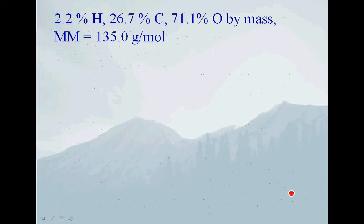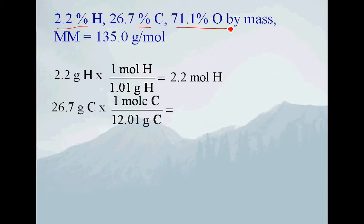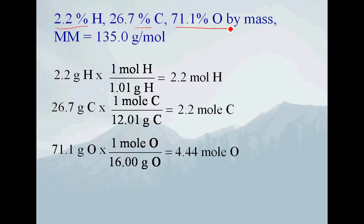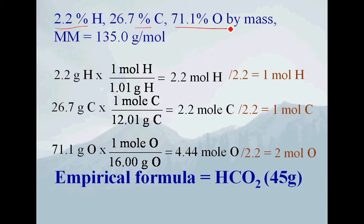Let's do one more, slightly more difficult example. We have three elements: hydrogen, carbon, and oxygen, given as percent by mass. We want the smallest whole number ratio first, then the empirical formula. Assuming 100 grams of material: 2.2 grams of hydrogen converts to 2.2 moles; 26.7 grams of carbon (molar mass 12.01) gives 2.2 moles; and 71.1 grams of oxygen gives 4.44 moles. Dividing by the smallest value, 2.2, gives a ratio of 1:1:2, so our empirical formula is HCO₂.